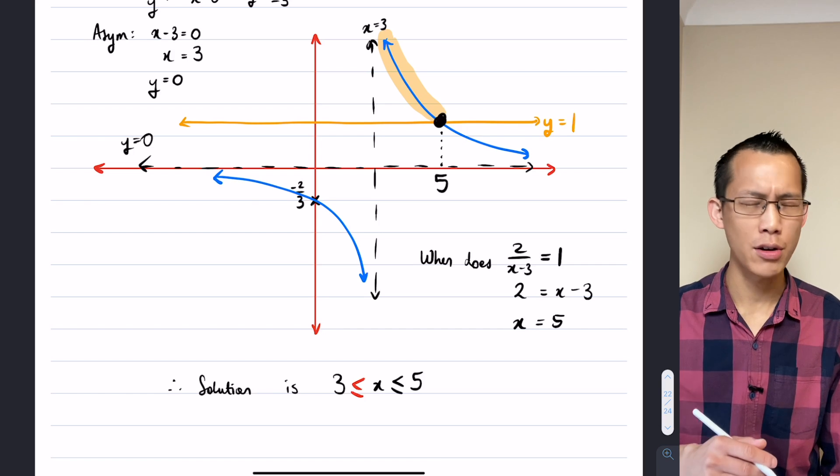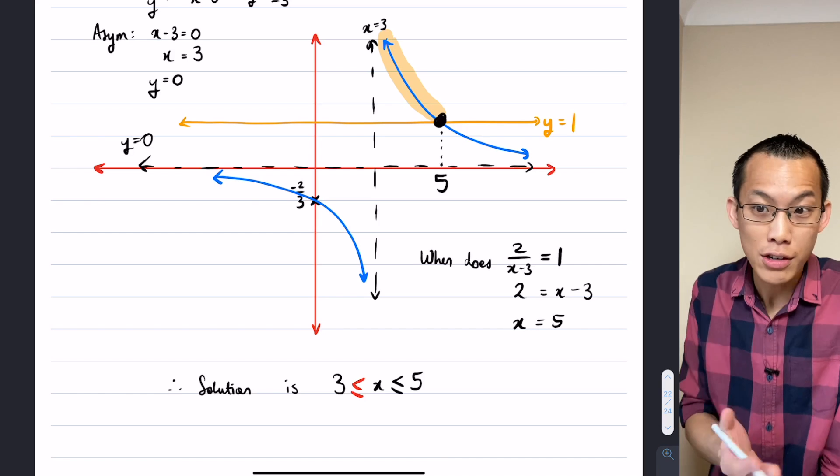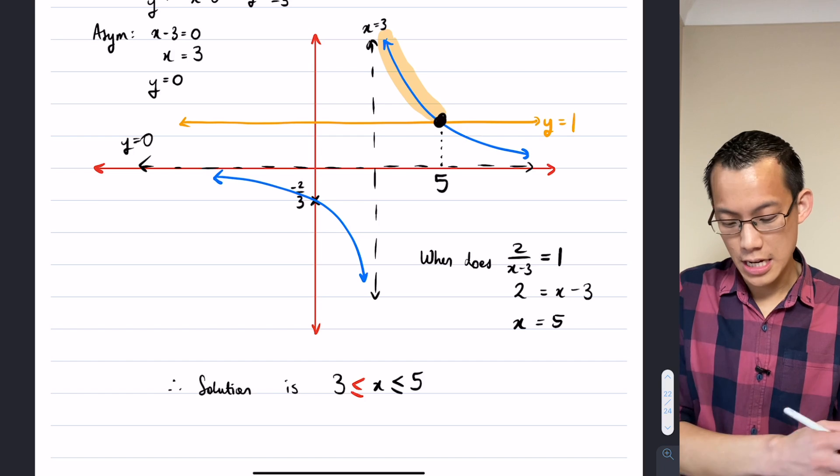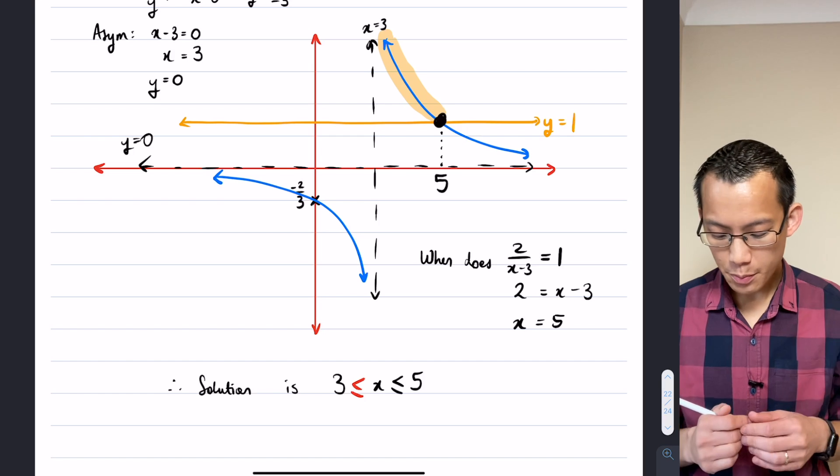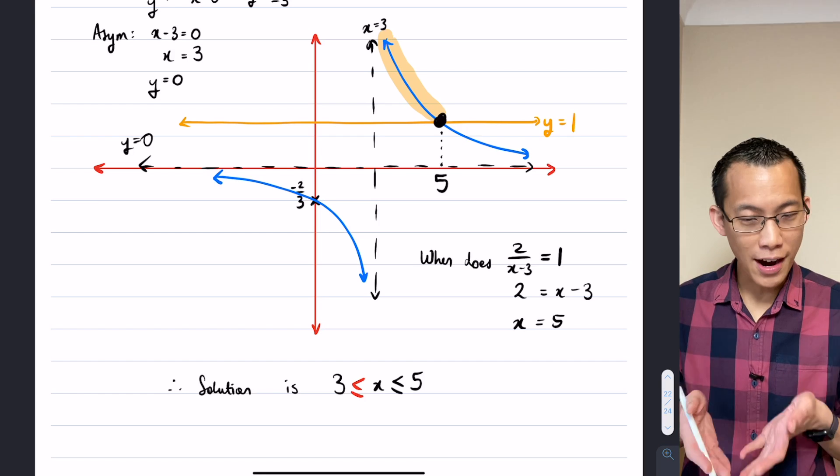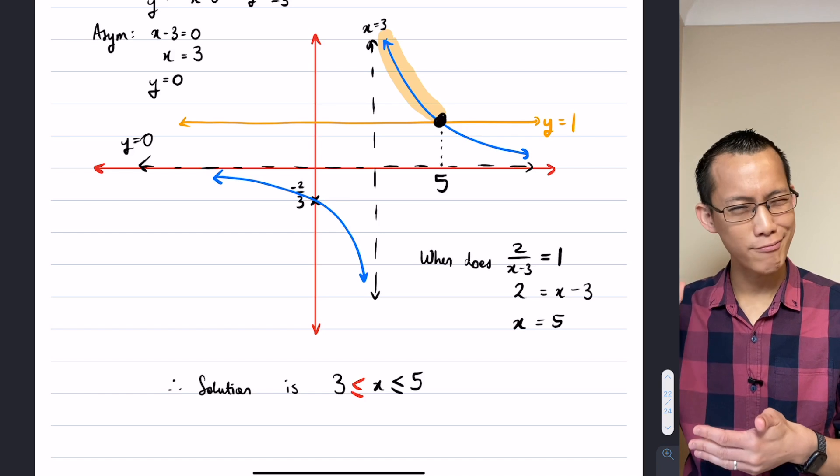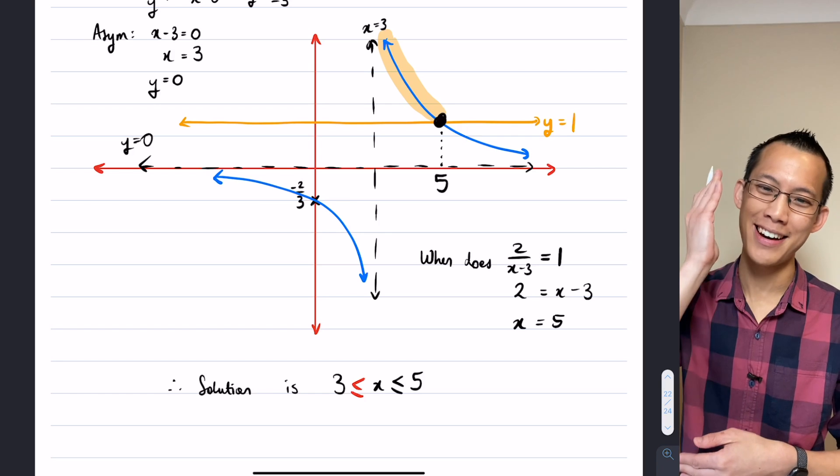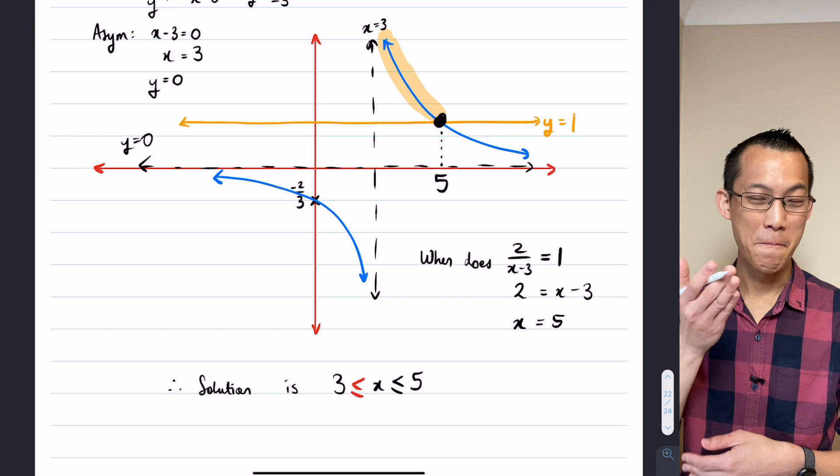You can't go on to x equals 3, the function just blows up. So as a consequence, you can't include the boundary in your answer. You can get as close as you like to it, but you can't actually get on to 3 itself.